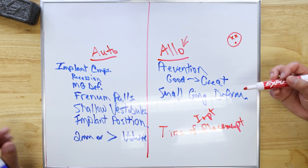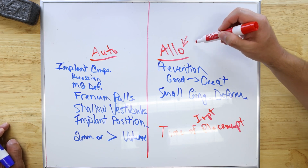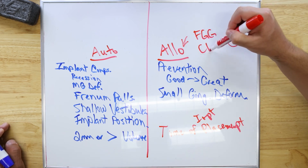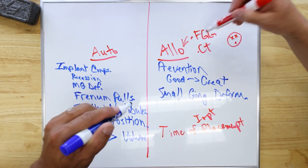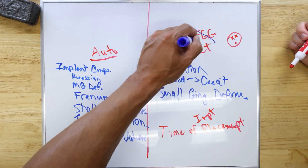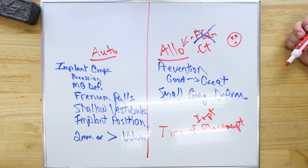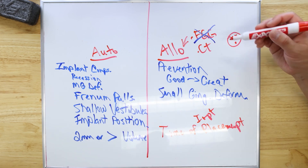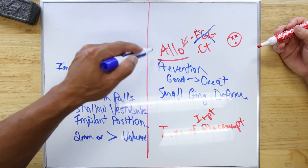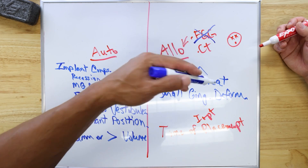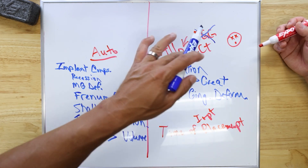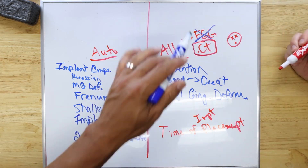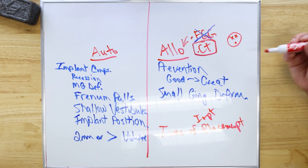My last question: is there an allograft for FGG and for connective tissue — do these exist? You cannot use an allograft for an FGG. It will die and cause everything else to die around it. They make the graft, but how you decide to use it is dependent on you. Don't use it as a free gingival graft — meaning don't use it as an onlay graft. Only inlay for allo.